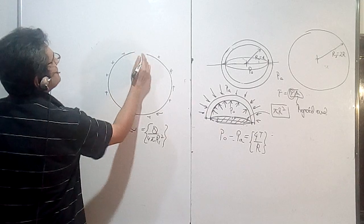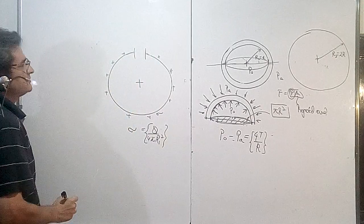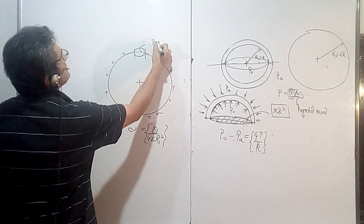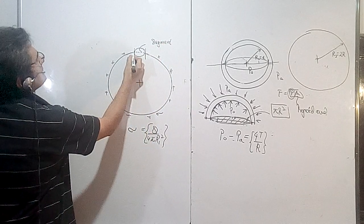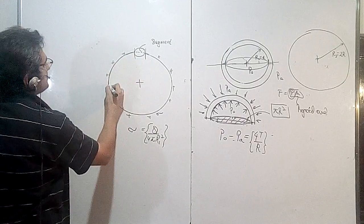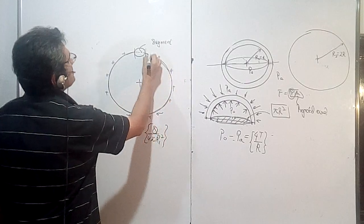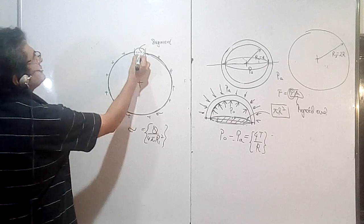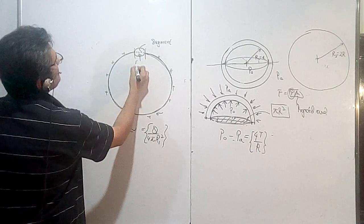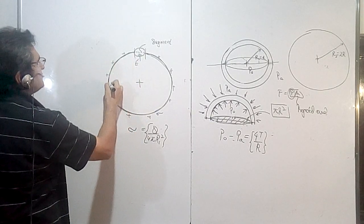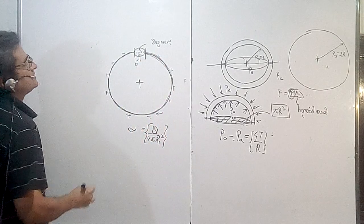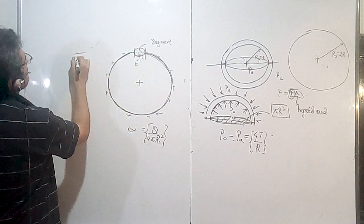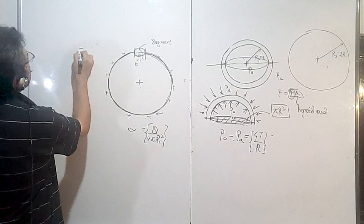To find the pressure exerted by the charge, take a small segment on the sphere. I want to know what is the force on this segment. Consider the electric field just near this segment due to the leftover portion — the rest of the sphere. Let that electric field be E dash. Now, the electric field inside the shell has to be zero — we are going to use that — but I am considering the field due to only the leftover part.